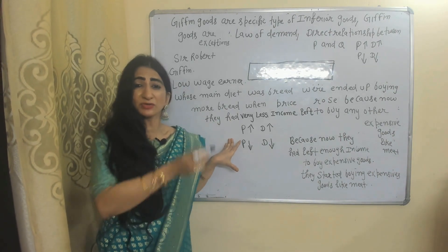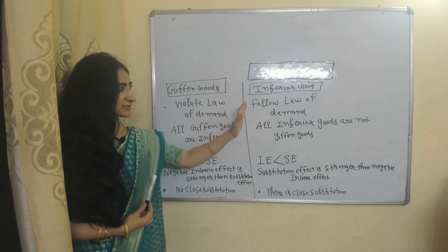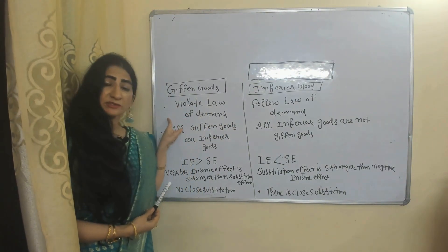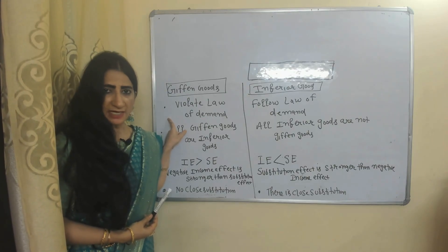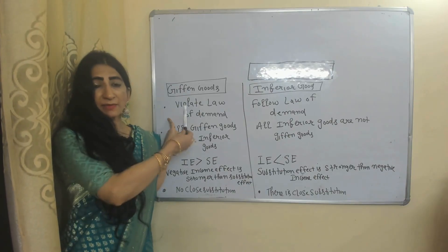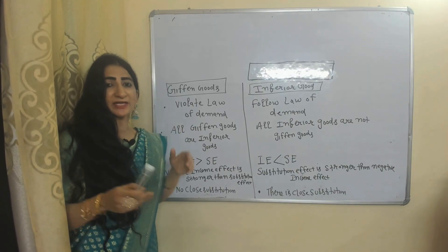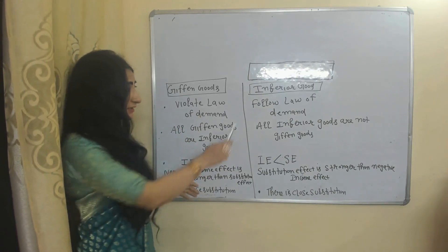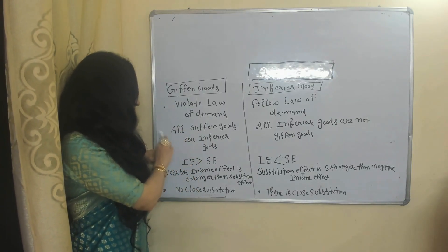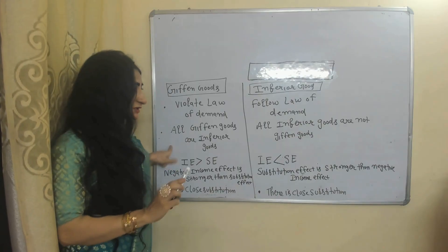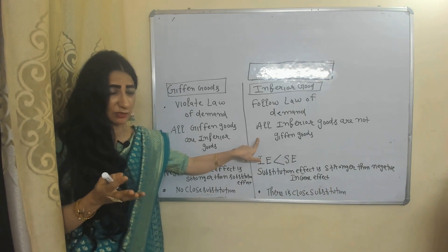Now, Giffen goods versus inferior goods: Giffen goods violate the law of demand — there is a direct relationship between price and demand — but inferior goods follow the law of demand. All Giffen goods are inferior goods, but all inferior goods are not Giffen goods. Giffen goods are a specific type of inferior goods.